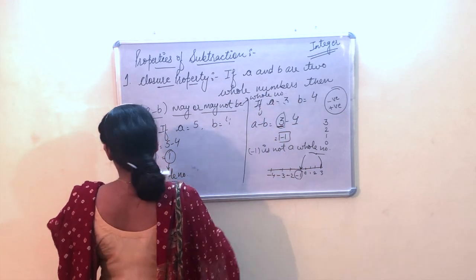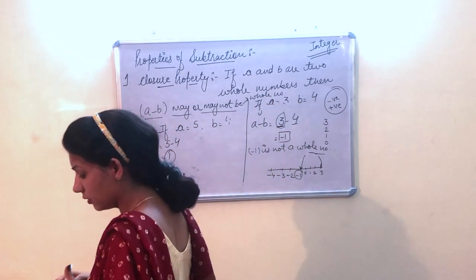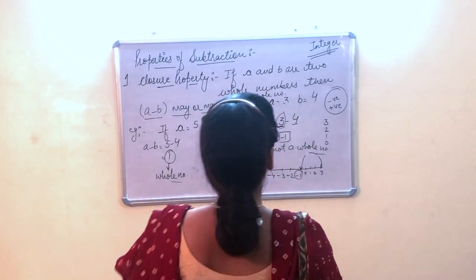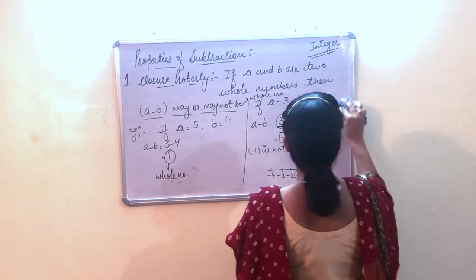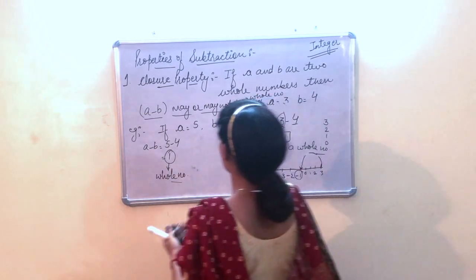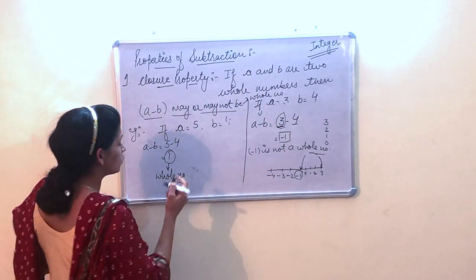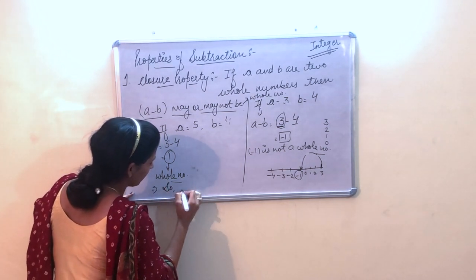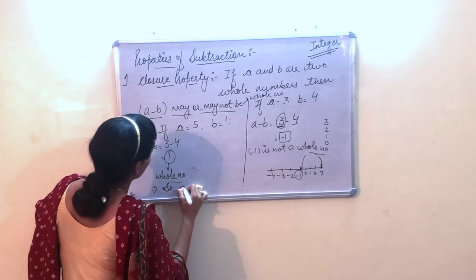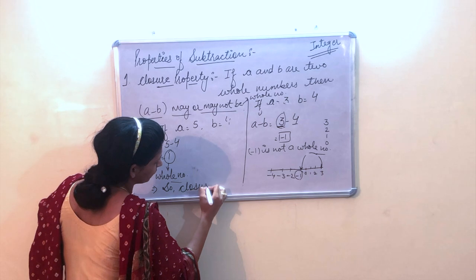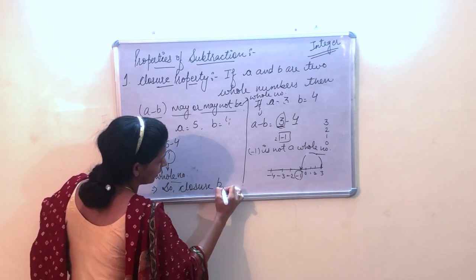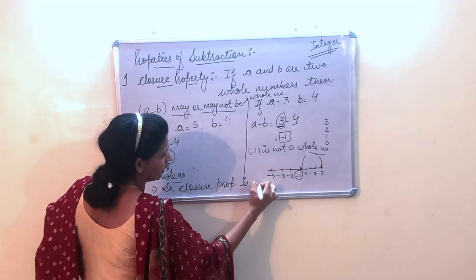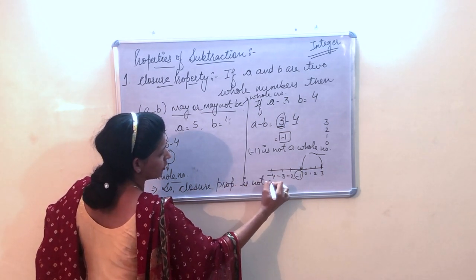So we cannot confirm this property as valid. Therefore, a minus b may or may not be a whole number. The closure property is not verified for subtraction of whole numbers.